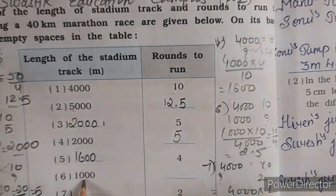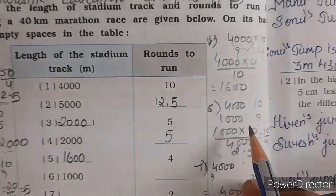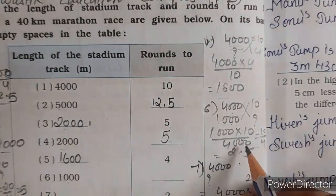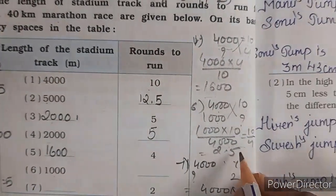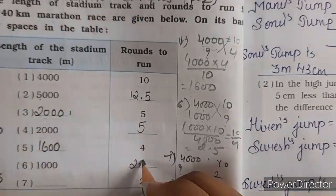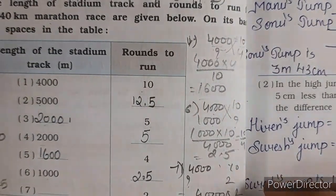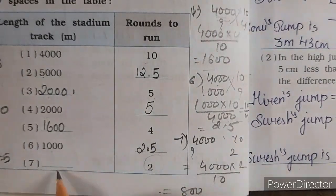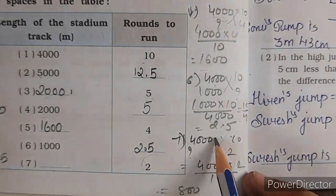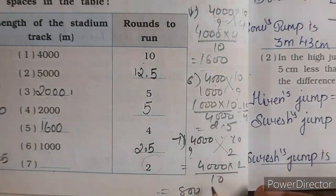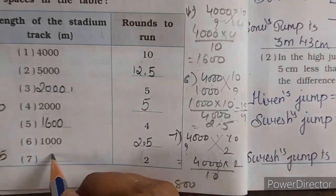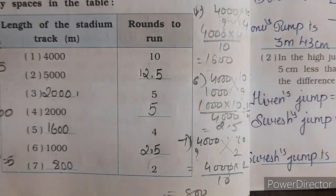Next, 1000 ke liye kitne rounds lagenge? 4000 ke liye 10 rounds hain, so 1000 ke liye cross multiplication — 1000 into 10 divided by 4000, answer aega 10 by 4 equals 2.5, yani ki 2 and half rounds maarne padenge. Next, 2 rounds mein kitna distance cover hoga? 4000 into 2 divided by 10 — zeroes cut, 400 into 2 equals 800. So 2 rounds mein 800 meter cover hoga.